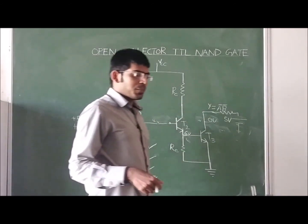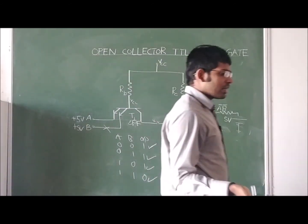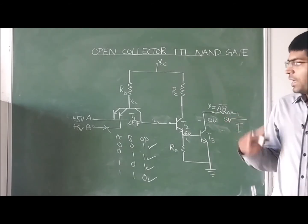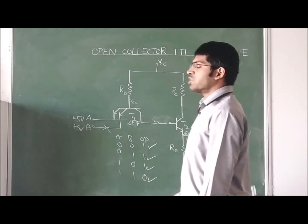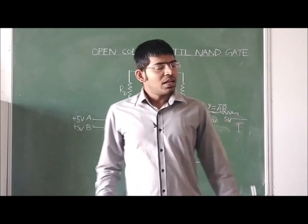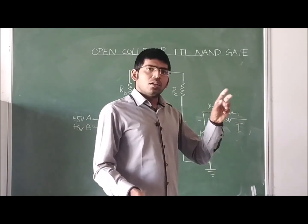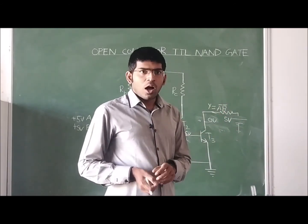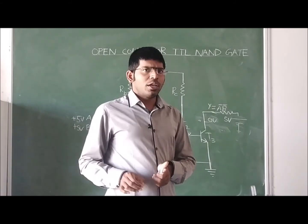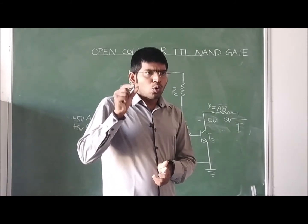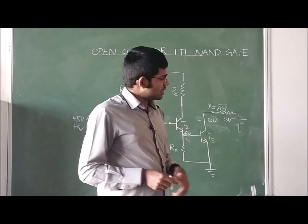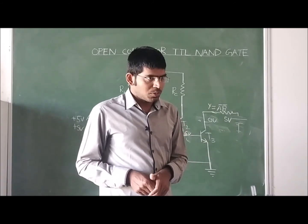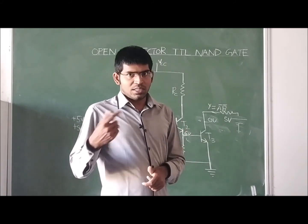This is how the Open Collector Transistor-Transistor Logic NAND gate is designed and operates. The disadvantage is that it is a very low speed circuit — the output changes slowly. To overcome this disadvantage, we will go for the totem pole concept, which will be discussed next.